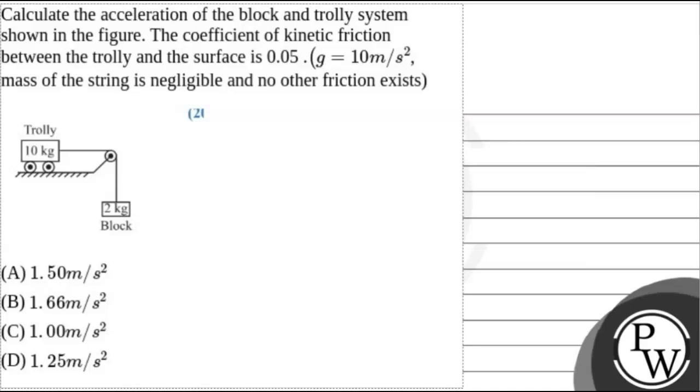Let's read the question. Calculate the acceleration of the block and trolley system shown in the figure. The coefficient of kinetic friction between the trolley and surface is 0.05, g is 10 m/s², mass of the string is negligible, and no other friction exists.